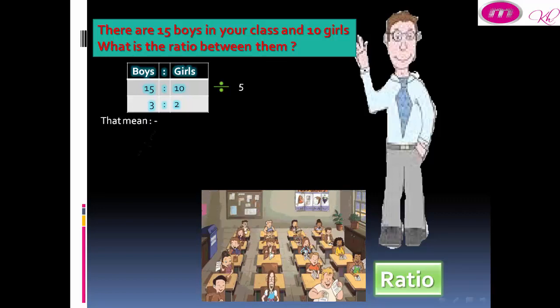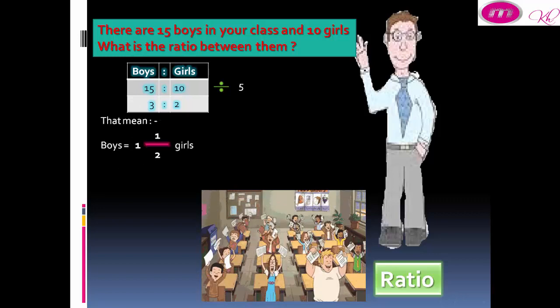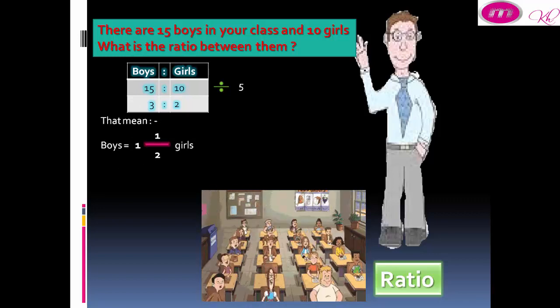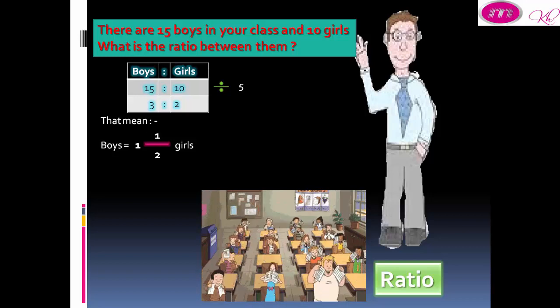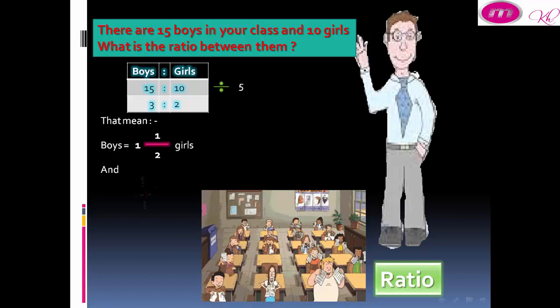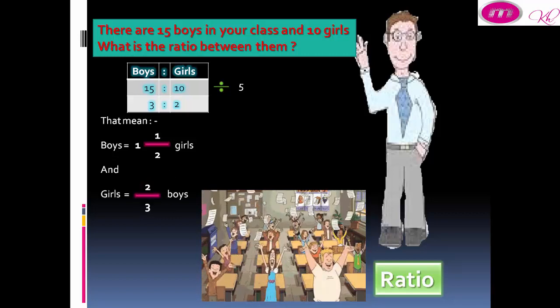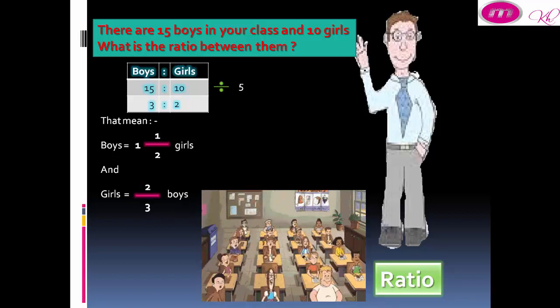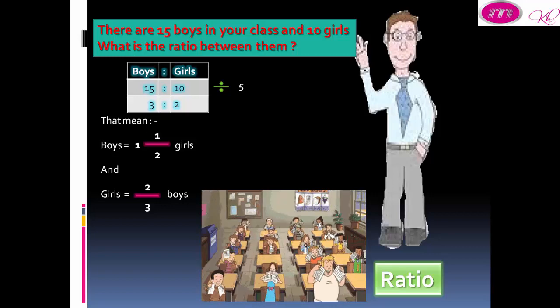This means boys equal one and a half of the number of girls, and the number of girls equals two-thirds the number of boys.